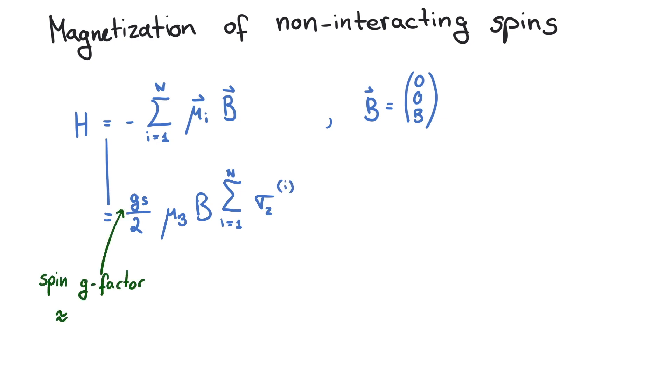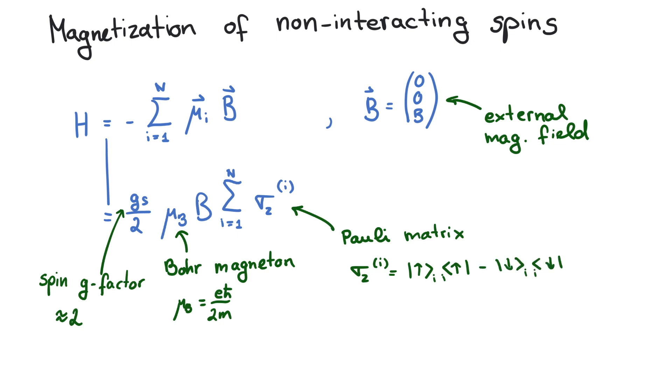Gs is the spin g-factor, mu b is the Bohr magneton, and B is the external magnetic field. Sigma zi describes a two-level system corresponding to the spin at site i.